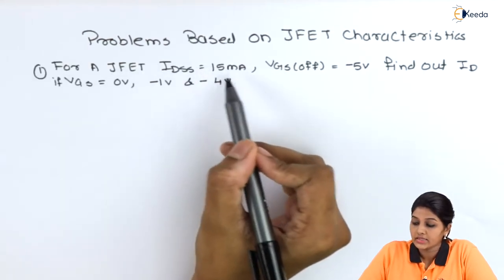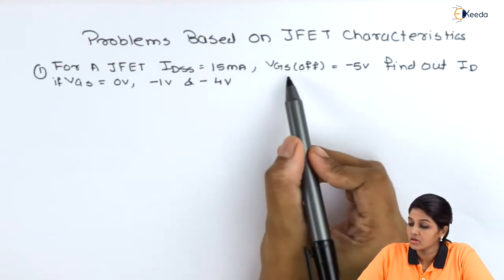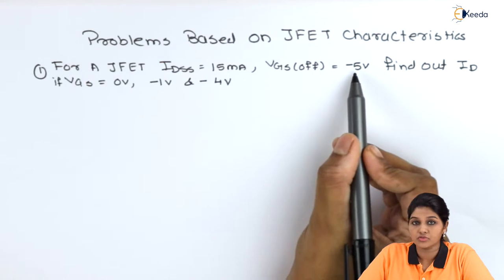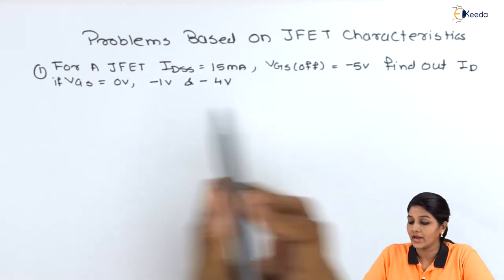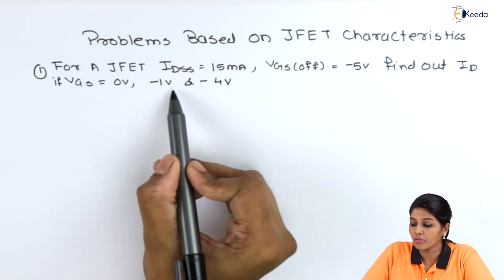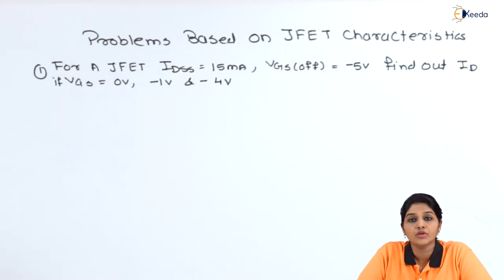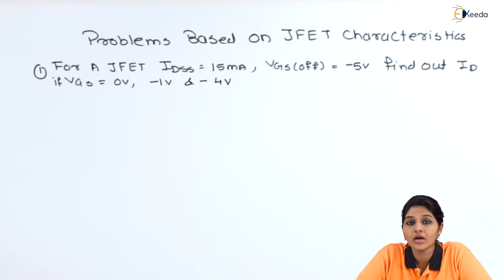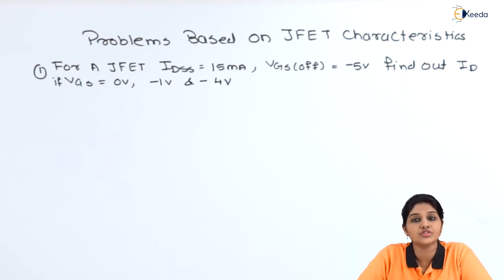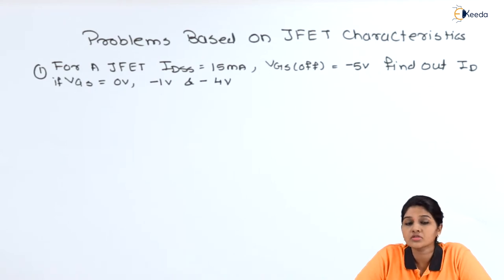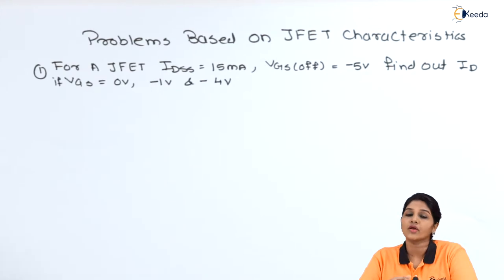The statement of the first problem is: For a JFET, IDSS = 50 mA and VGS(off) = −5 V. Find ID for VGS = 0 V, −1 V, and −4 V. We need to find the drain current for different values of VGS. We know the formula: ID = IDSS × (1 − VGS/VGS(off))². By substituting the various values of VGS, we can easily obtain the corresponding values of ID.